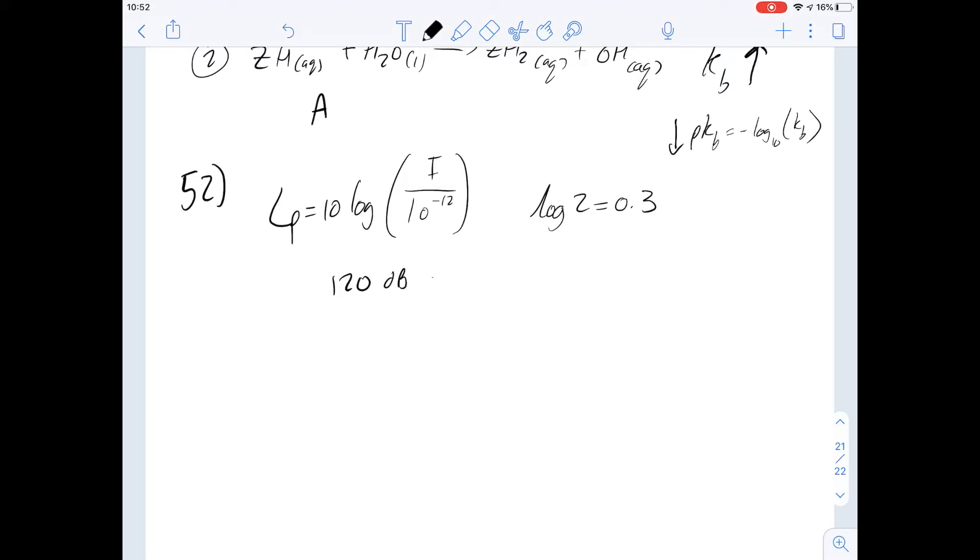We know the threshold for pain is going to be 120 decibels at 1000 hertz and that's going to be the threshold of pain. But normal conversation is going to be 60 decibels at 1000 hertz.